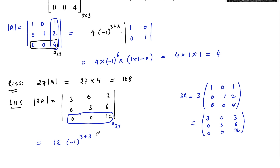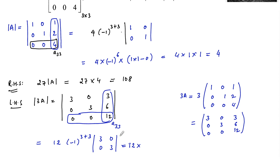The submatrix obtained by deleting the third row and third column is [3 0; 0 3]. The determinant of that submatrix is 3×3 = 9. So det(3A) = 12 × (−1)^6 × 9 = 12 × 1 × 9 = 108.